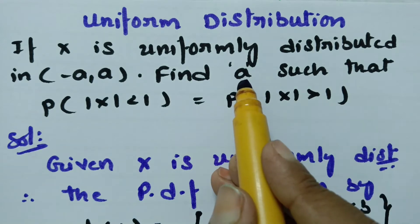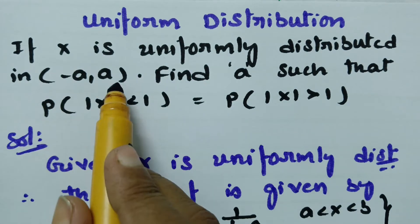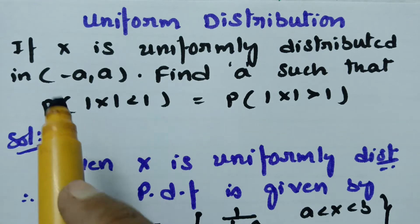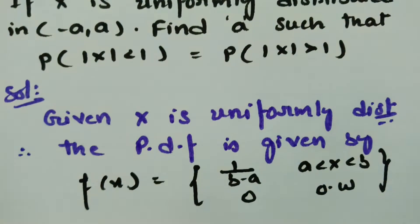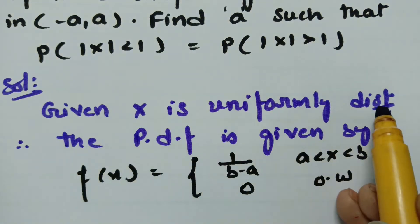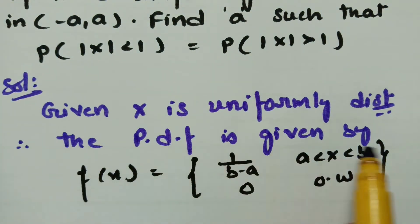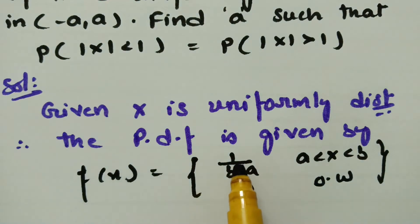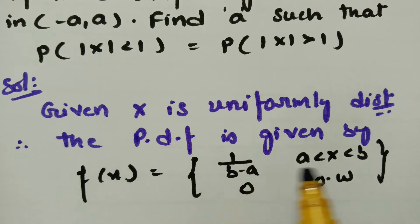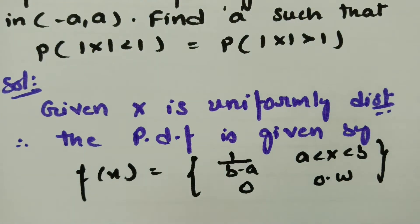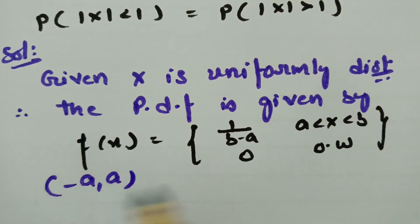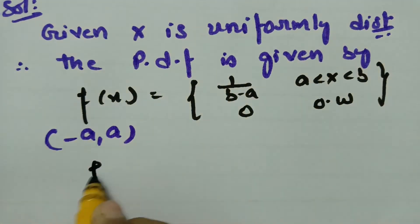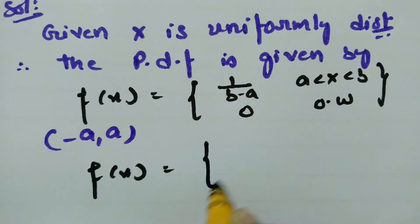We need the value of 'a', given interval is (-a, a). Since x is uniformly distributed, the probability density function is f(x) = 1/(b - a), where x lies between a and b, and 0 otherwise. Here the interval is (-a, a).